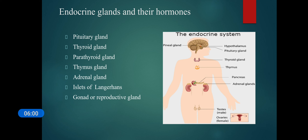Next is the thyroid gland, located in the front part of your neck. It is very important for our metabolism — that is, how we produce energy inside our body and carry out internal organic reactions. The major hormones released from the thyroid gland are triiodothyronine, thyroxine, and calcitonin. These thyroid hormones play a very important role in metabolism and in developing our bones.